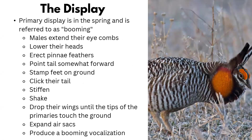During booming in spring, males simultaneously extend their eye combs, lower their heads, raise their pinnae, stamp on the ground, click their tails, drop their wings to touch the ground, expand their air sacs, and produce that remarkable booming sound. The best way to describe it: if you've ever blown air over the top of an empty bottle — that hollow, resonant sound — that's what the male prairie chicken sounds like.